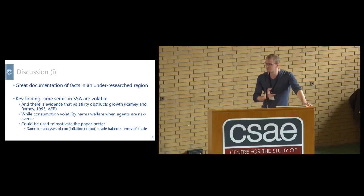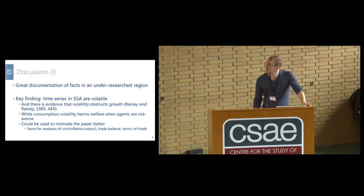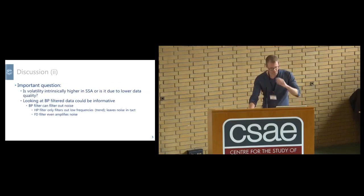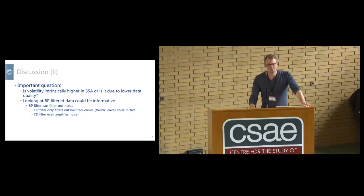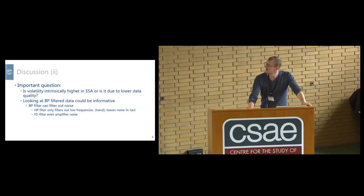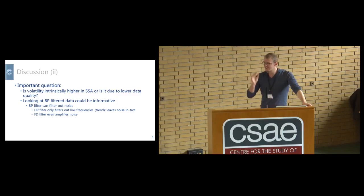One issue that remains unsettled is whether the volatility in Sub-Saharan Africa is intrinsically higher, or basically due to lower data quality and greater measurement error. Data revisions tend to be bigger in agricultural-based economies. The filtering you've already done could be informative here: the bandpass filter allows you to cut off the noise component of the time series, while the first-difference filter actually amplifies noise. If noise is present, it should mostly show up in the first-difference filter time series, which could help distinguish intrinsic volatility from measurement error.